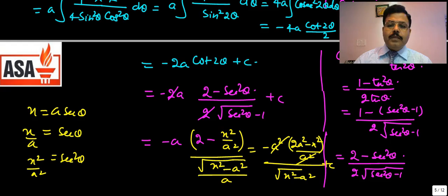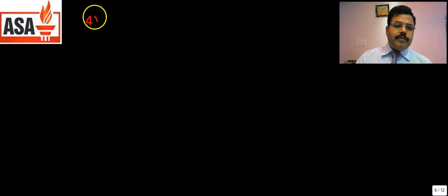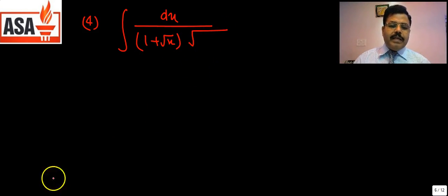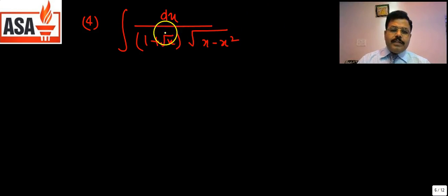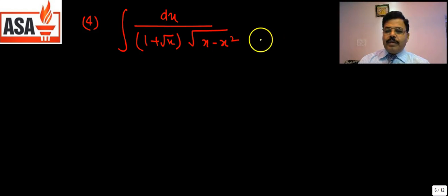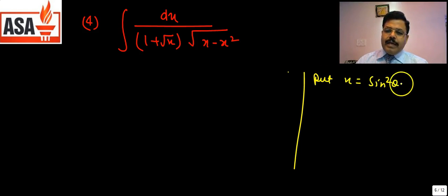Now the next question: ∫dx / (√(1+√x) · √(x−x²)). To answer this, put x = sin²θ, so dx = 2sinθ cosθ dθ. Then √x = sinθ, x − x² = sin²θ − sin⁴θ = sin²θ(1−sin²θ) = sin²θ cos²θ, so √(x−x²) = sinθ cosθ.